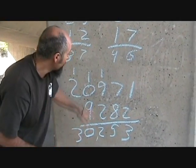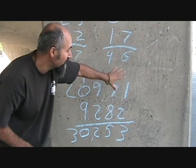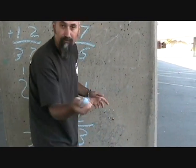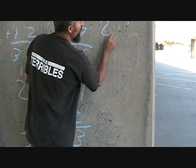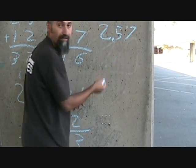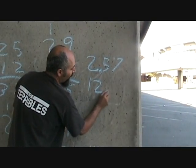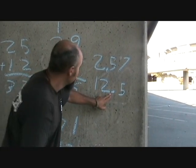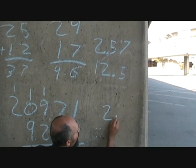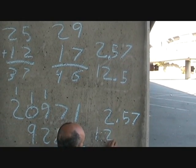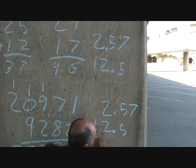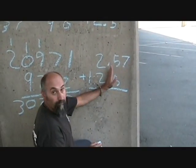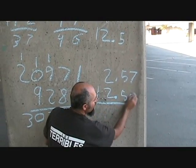Now if you have decimals when you're adding numbers, what you do is you line up the numbers according to their decimals. So for example, if I give you two numbers, 2.57 and 12.5, what you do is you line up your numbers according to the decimals. So you go 2.57, 12.5, and you're adding them based on this boundary. So there's no number here, so you just add a 0.